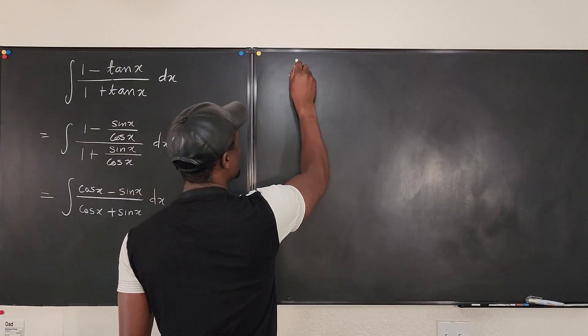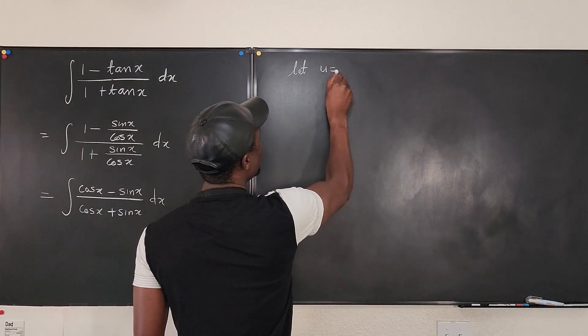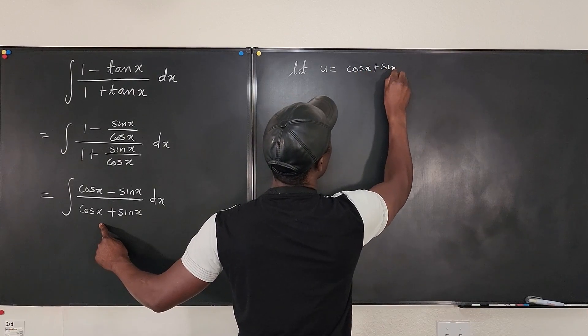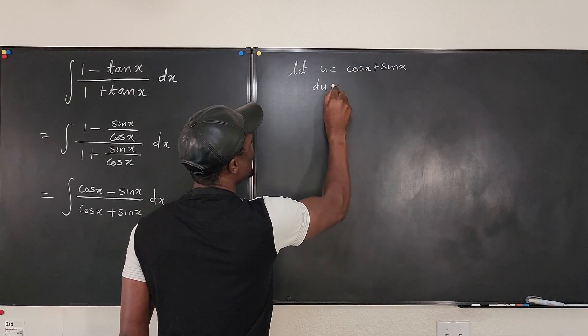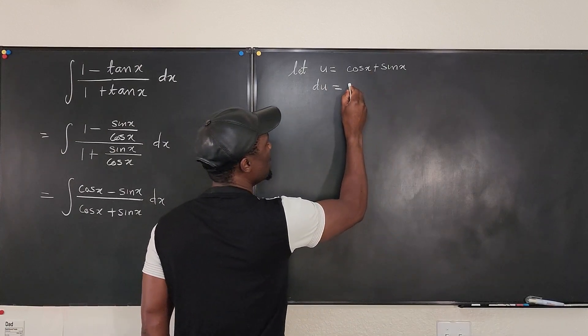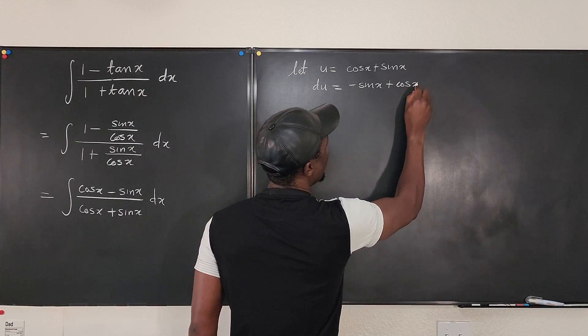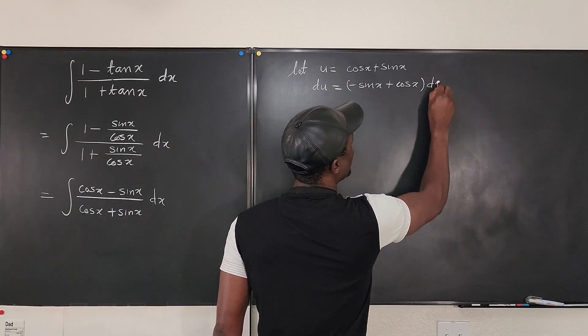Let's say, let u be equal to cosine x plus sine x. Then I know that du will be equal to the derivative, which is negative sine x plus cosine x dx.